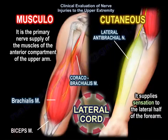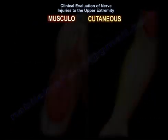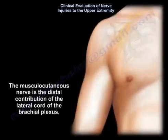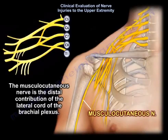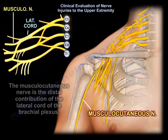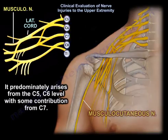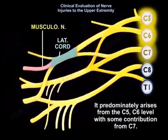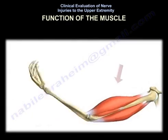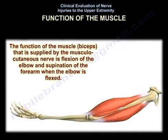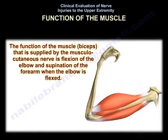It supplies sensation to the lateral half of the forearm. The musculocutaneous nerve is the distal contribution of the lateral cord of the brachial plexus, predominantly arising from C5 and C6 with some contribution from C7. The function of the biceps is flexion of the elbow and supination of the forearm when the elbow is flexed.